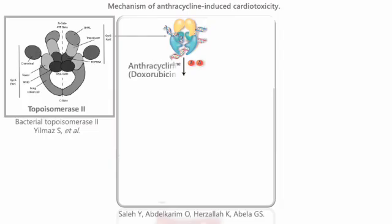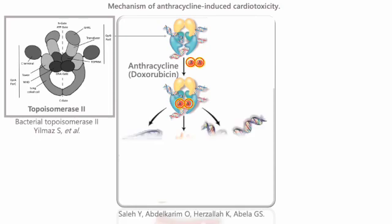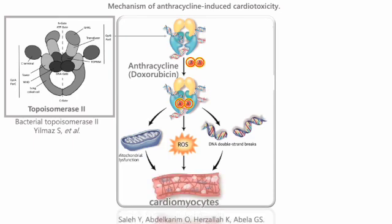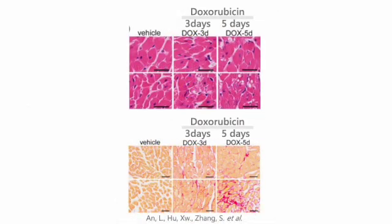Doxorubicin disrupts the normal catalytic cycle of topoisomerase-2 beta, causing DNA double-stranded breaks, mitochondrial biogenesis, and an increase in reactive oxygen species. As a result, cardiomyocytes show myofibrillar disarray and vacuolization.